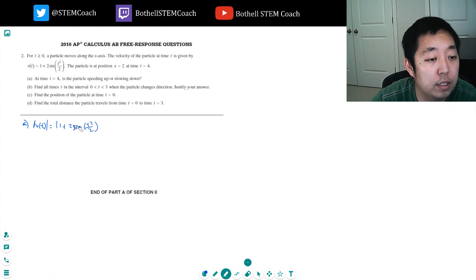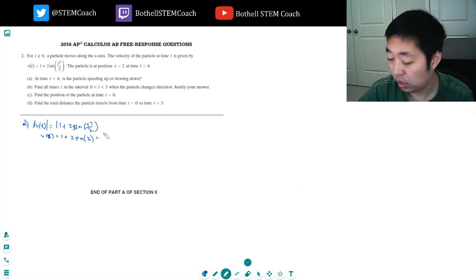So the absolute value is 1 plus 2 sine t squared over 2. And you may want to plot this to get a sense of idea. At 2, or v of 2.